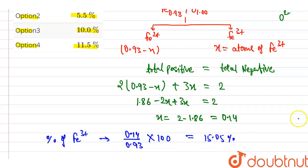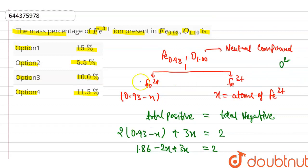So our correct option is option number first, the mass percentage of Fe+3 iron present in Fe0.93 O1.0 is 15%. Thank you.